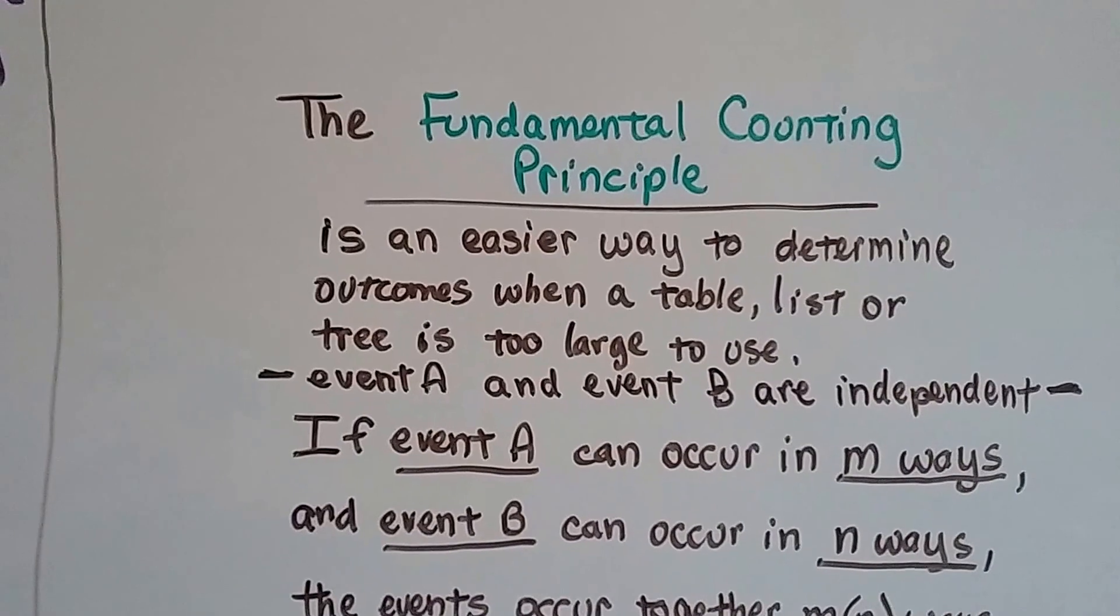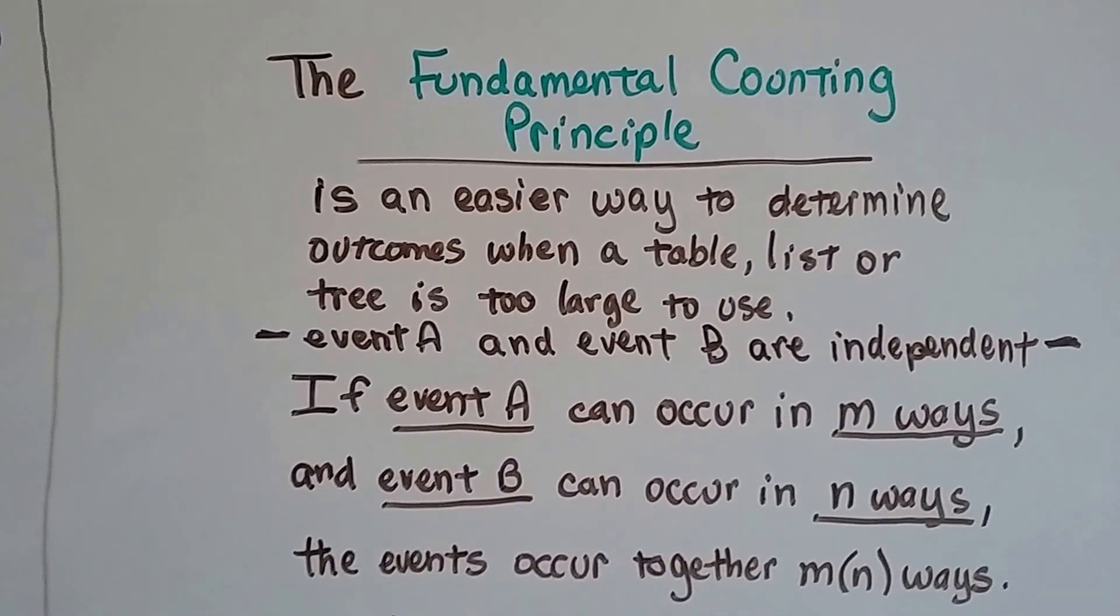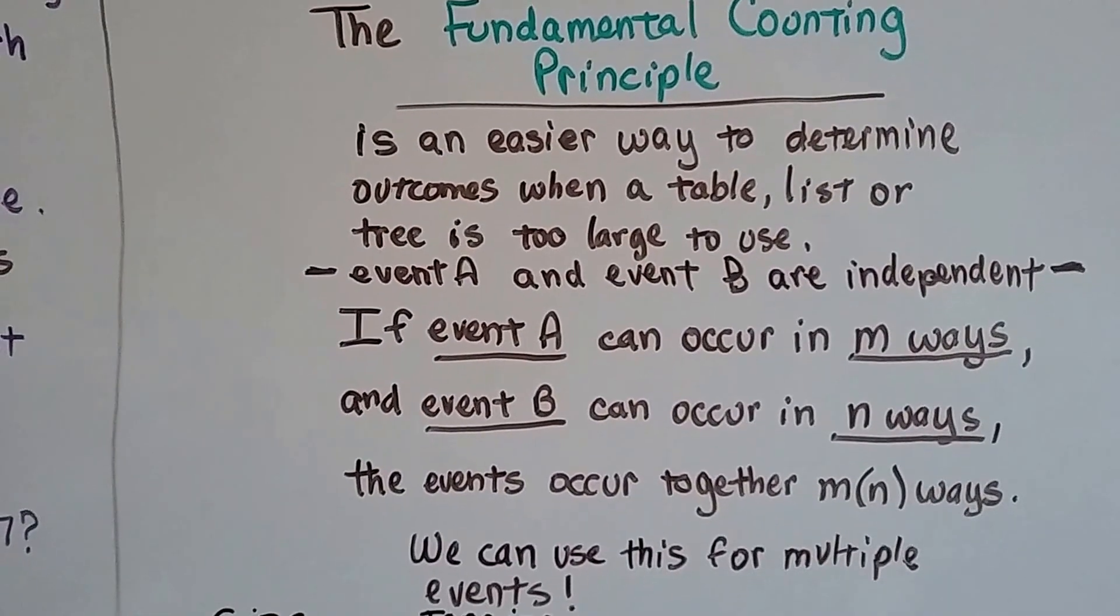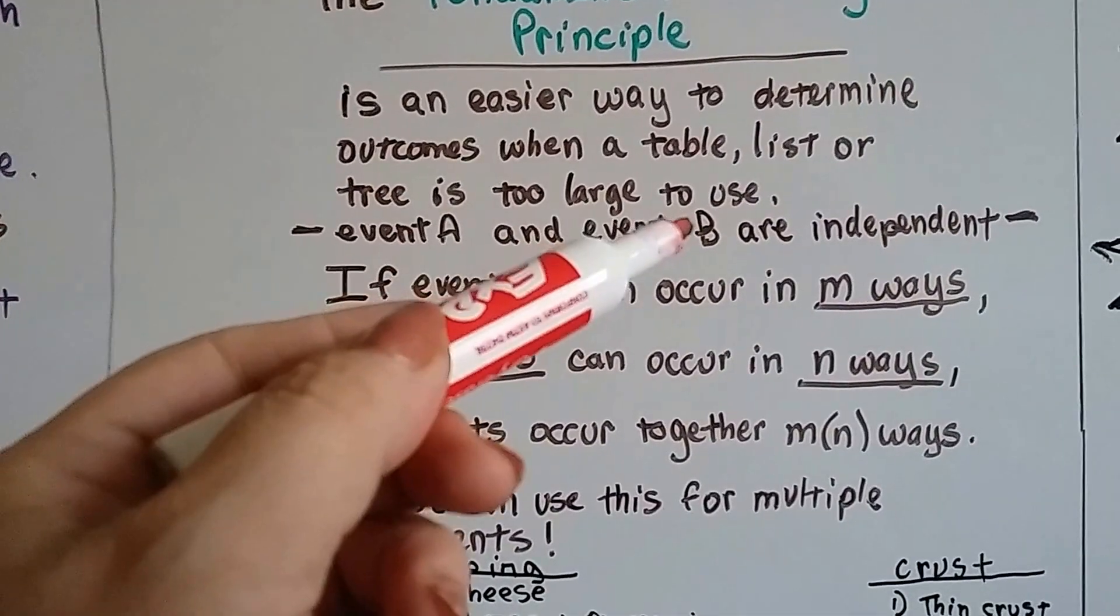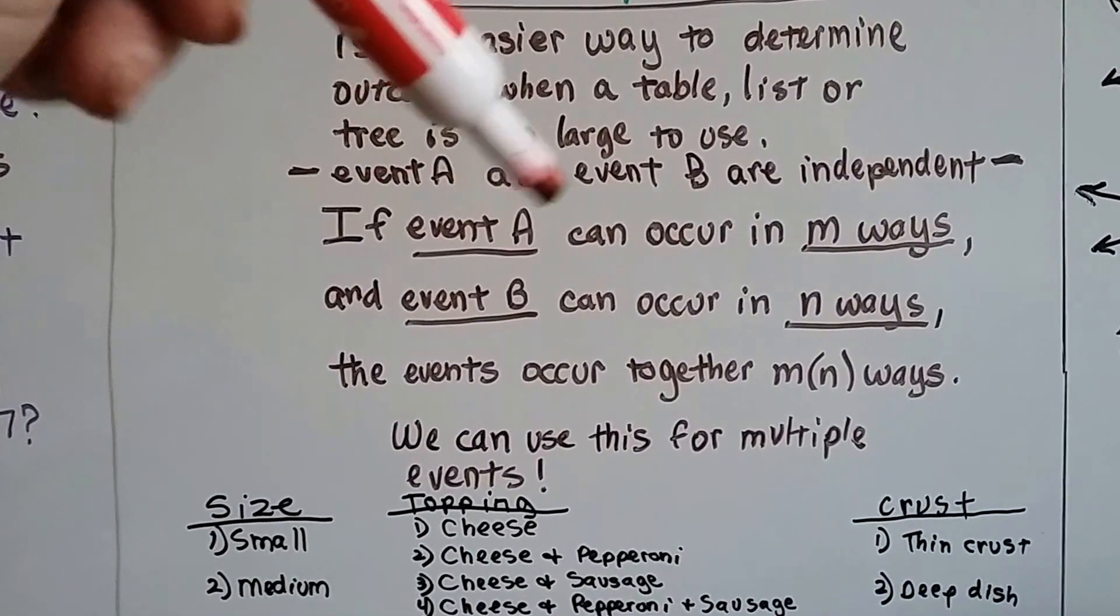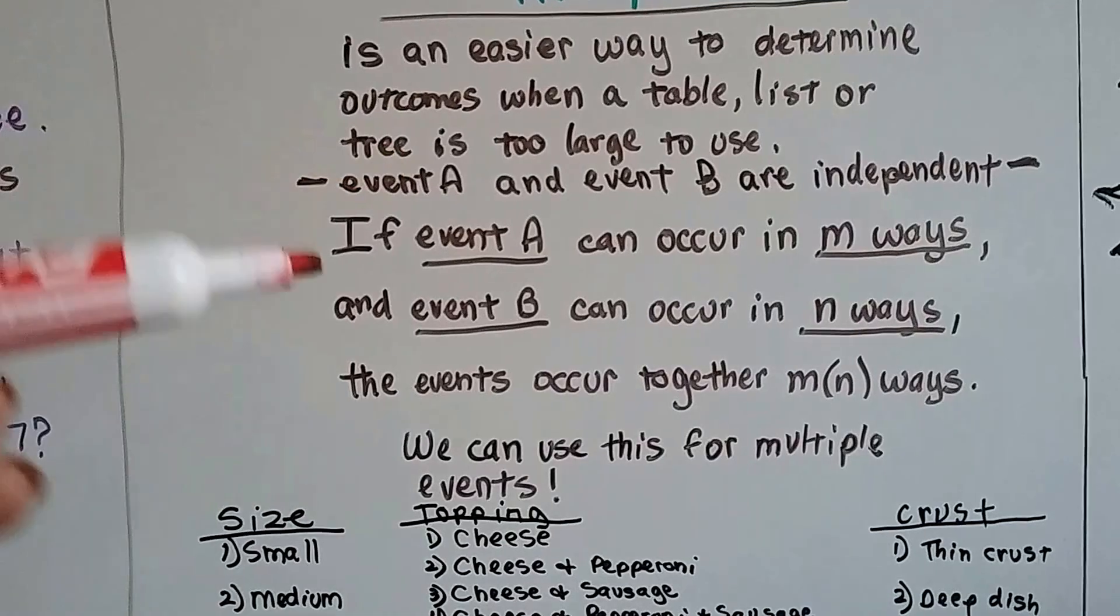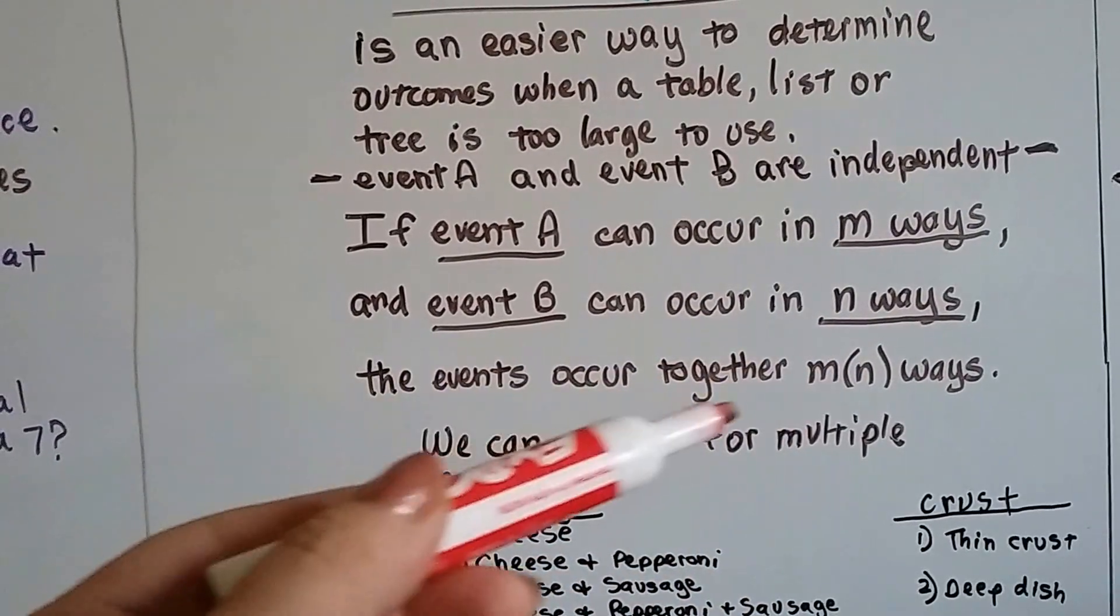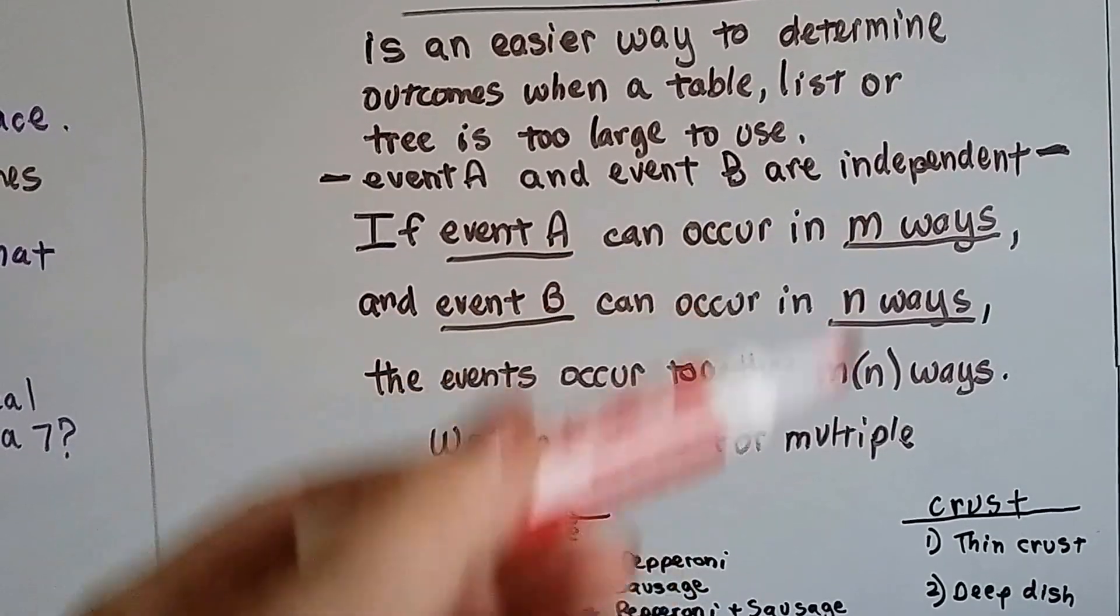Now I wanted to explain this to you. There's a thing called the fundamental counting principle. It's an easier way to determine outcomes when a table, list, or tree is just too large to use. What if you have too many options? There's an event A and event B, and they're independent of each other. If event A can occur in m amount of ways and event B can occur in n ways, then they occur together m times n. You would multiply them.